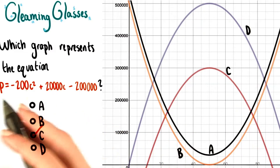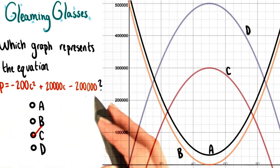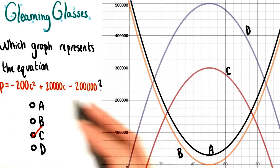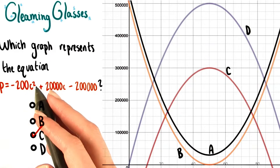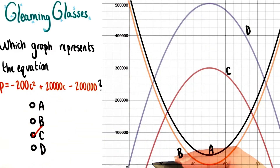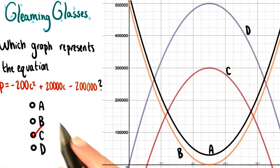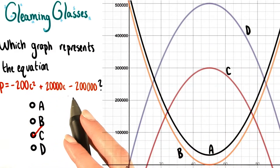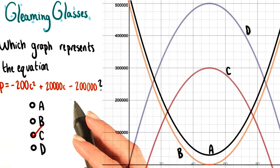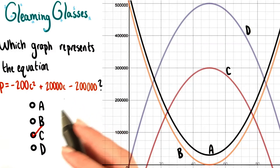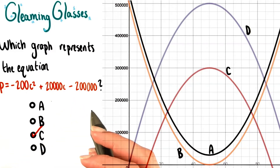So this is interesting. As we could have guessed from our equation, since we have a C squared term, we have a parabola. This is going to give us a great opportunity to use some of the skills that we learned in the last few lessons, and also some new ones.